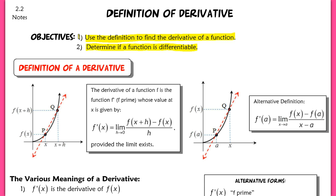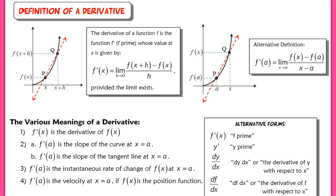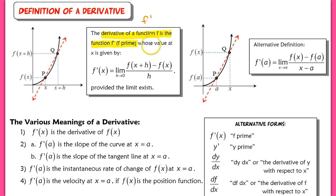Let's talk about the definition of the derivative. The same limit used to show the slope of a tangent line at a point P — where we move Q closer and closer to P and look at the limit as h approaches 0 of the difference quotient — is used here. The derivative of a function is f prime, and its value at x is given by the limit as h approaches 0 of that difference quotient.